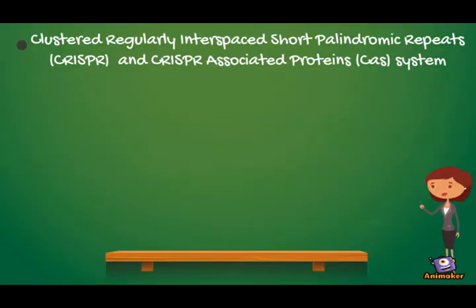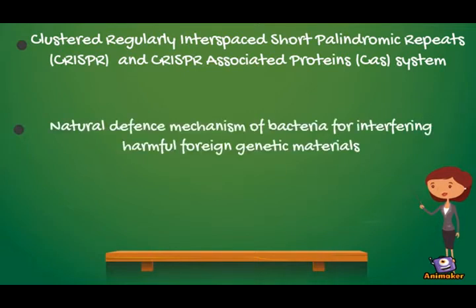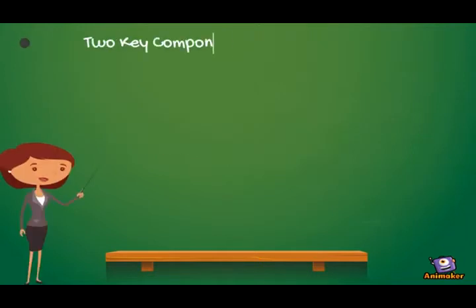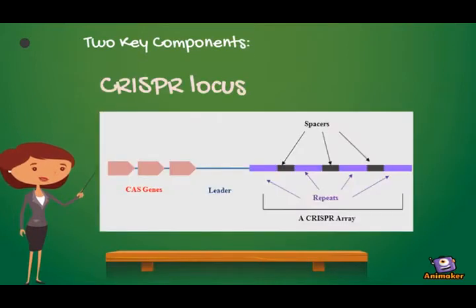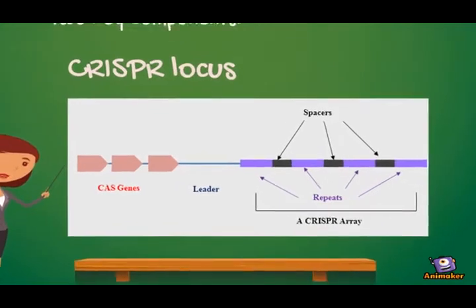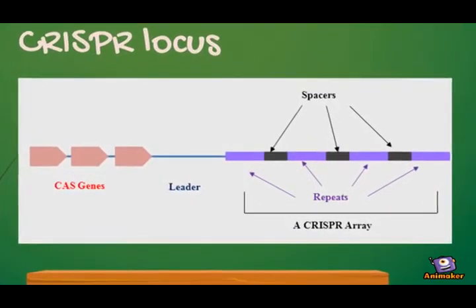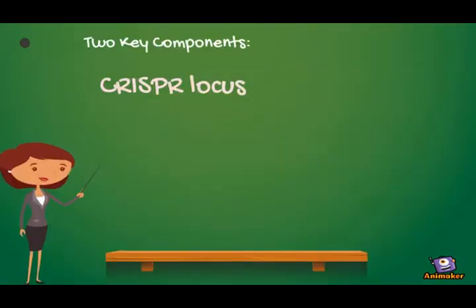CRISPR-Cas system is known as Clustered Regularly Interspaced Short Palindromic Repeats and CRISPR-Associated Protein. It is a natural defense mechanism of bacteria for interfering with harmful foreign genetic materials. There are two key components in the CRISPR system. First is the CRISPR locus, located on the bacteria genome, composed of repeating sequences about 30 nucleotides in length. The other component is the Cas protein, encoded next to the CRISPR locus.